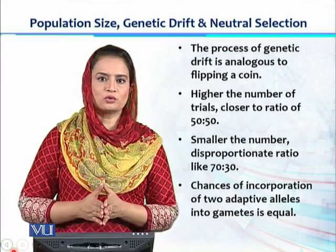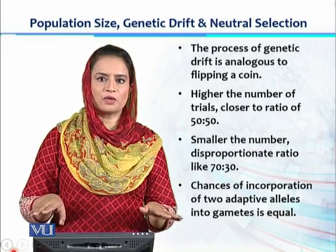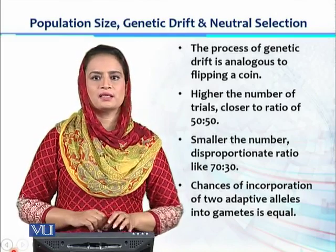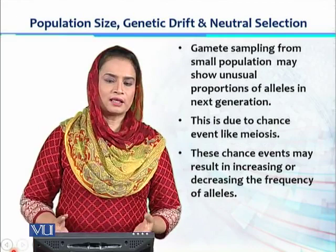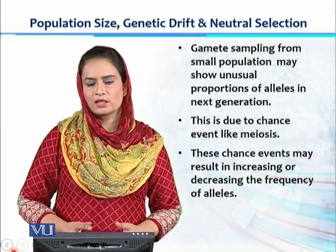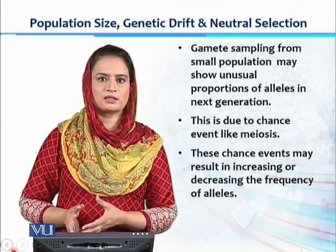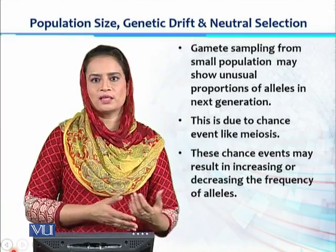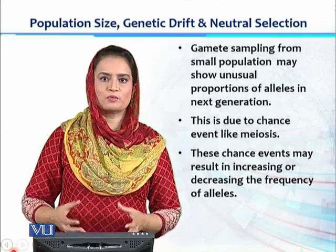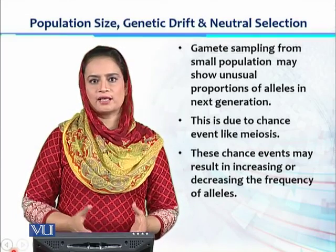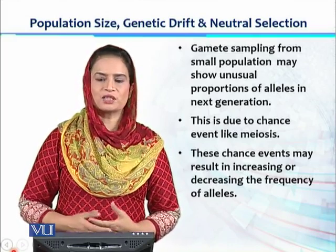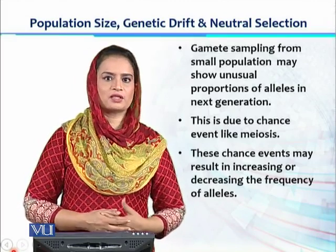When two alleles are assorting during gamete formation, there is a 50-50 chance — 50% of getting a dominant allele and 50% of getting a recessive allele in offspring. However, if gamete sampling is done from a smaller population, unusual results appear. Instead of a 50% dominant to 50% recessive ratio, it could be imbalanced — more dominant or more recessive alleles. In a larger population we get a ratio closer to 50-50, but in a smaller population there is a possibility of chance events such as meiosis.